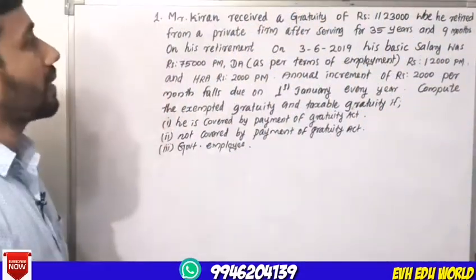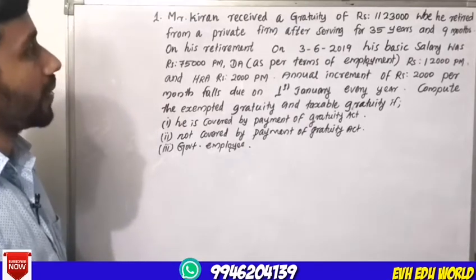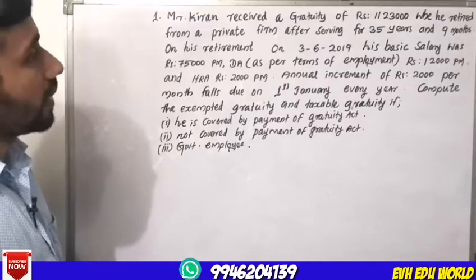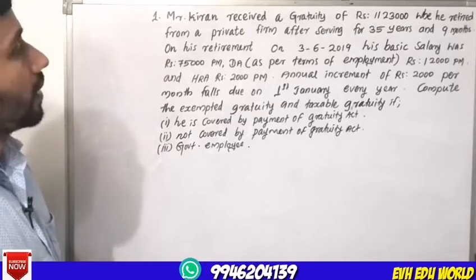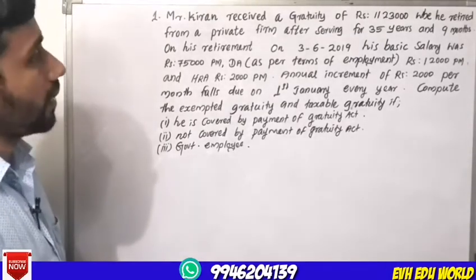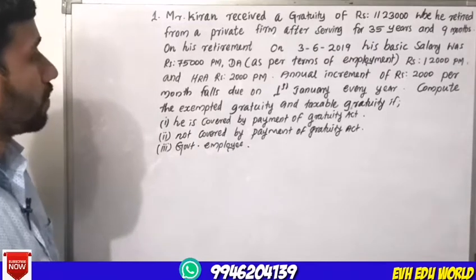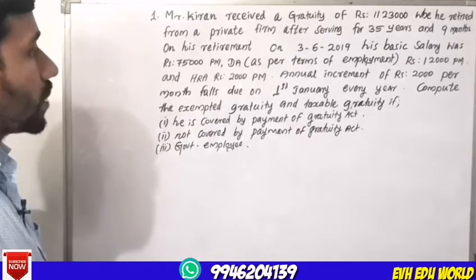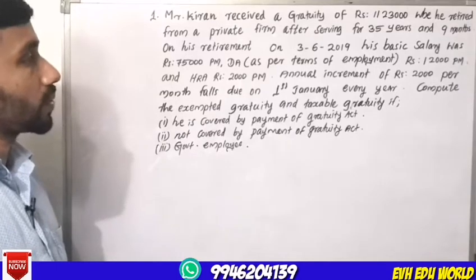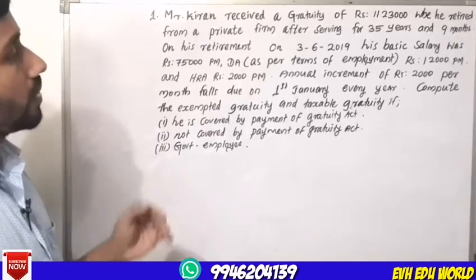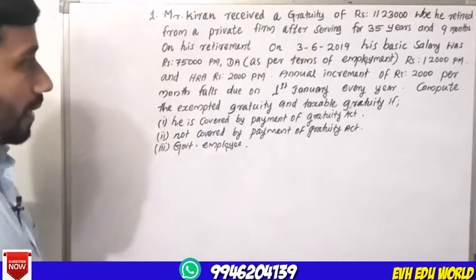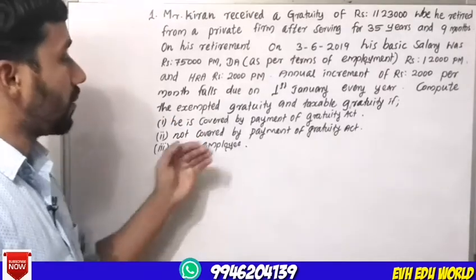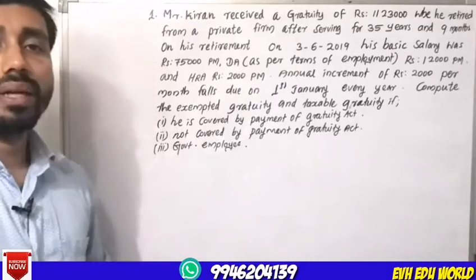The question is: Mr. Kiran received a Gratuity of Rs. 11,23,000 when he retired from a private firm after serving for 35 years and 9 months. On his retirement on 3-6-2019, his basic salary was Rs. 75,000 per month, DA as per Terms of Employment Rs. 12,000 per month, and HRA Rs. 2,000 per month. Annual increment of Rs. 2,000 per month falls due on 1st January every year. Compute the Exempted Gratuity and Taxable Gratuity if he is covered by Payment of Gratuity Act and as Government Employee.